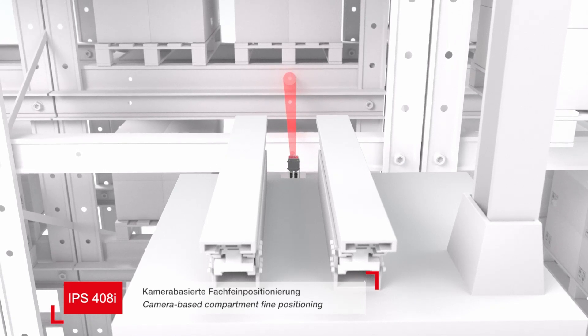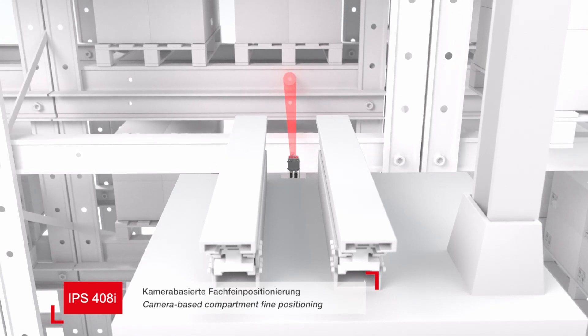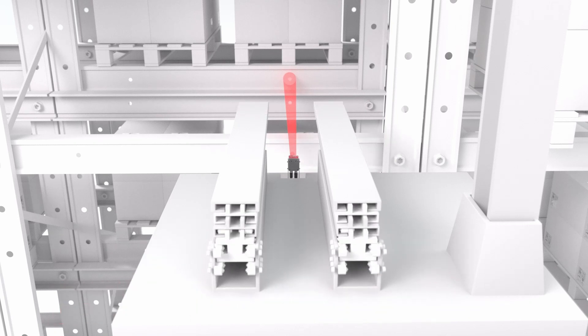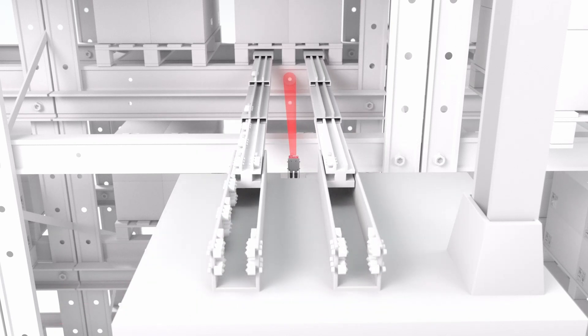Our camera-based sensors use the hole marks attached to the shelf for fine positioning. They can be used on both single and double depth racks.